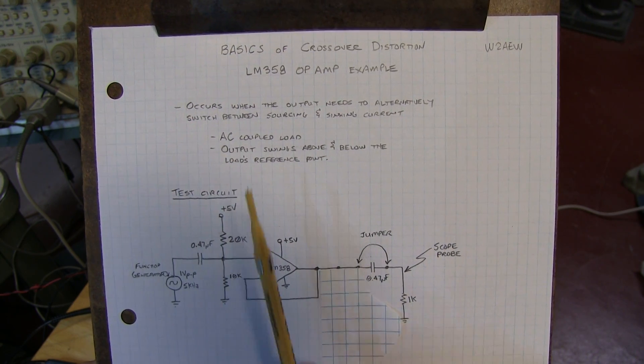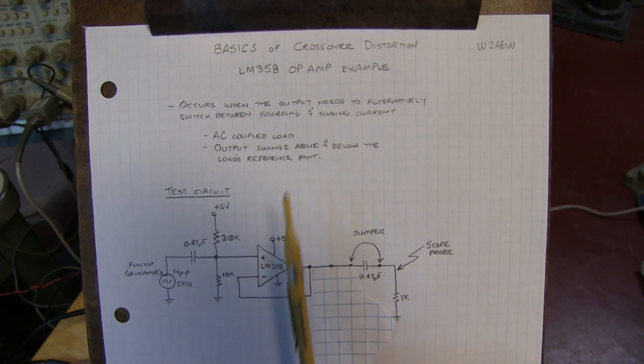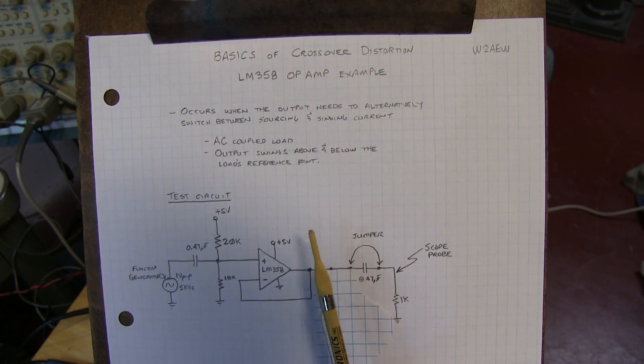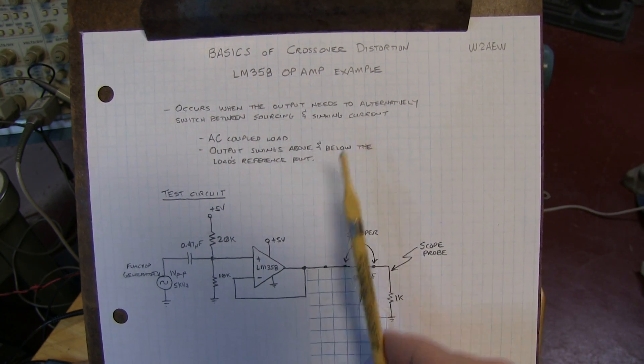Crossover distortion occurs often when the output stage of a circuit needs to switch between different modes of operation, such as sourcing or sinking current.